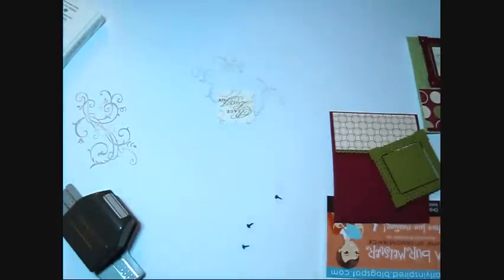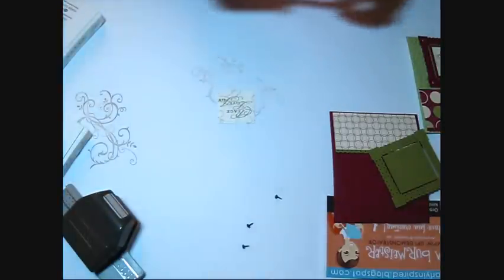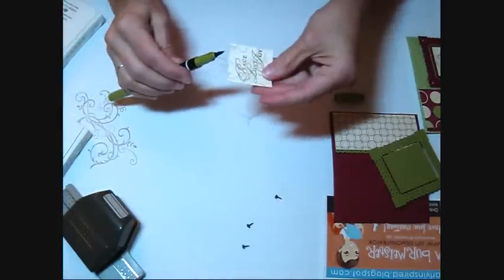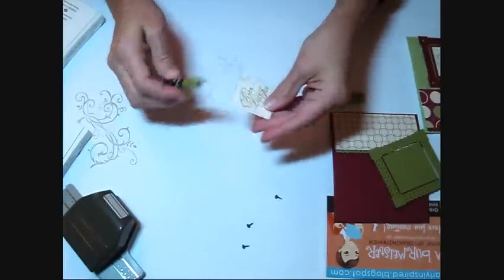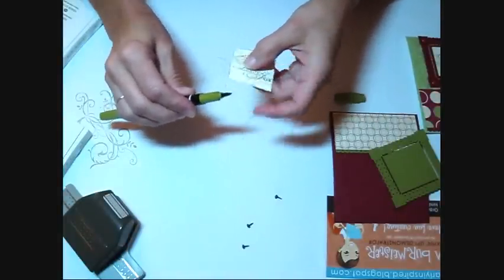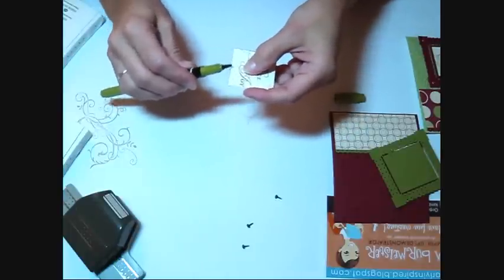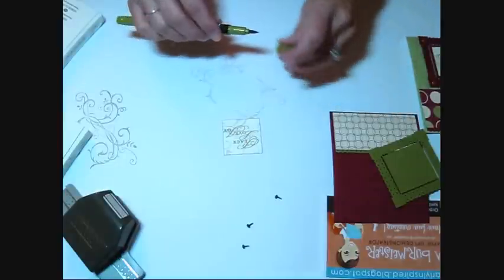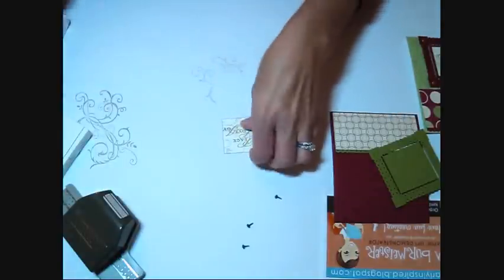So then I usually like to do a line around with, I'll just take an Old Olive marker because I used Old Olive ink, and I just do a line to give it kind of a border with my marker. Okay. Then I glue that on my frame.